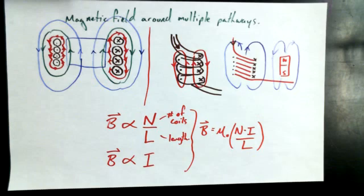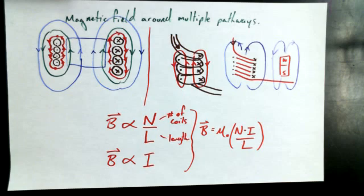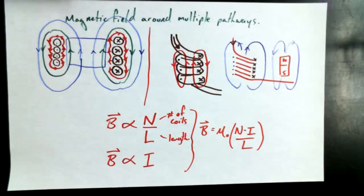A student asks where diameter factors in. The teacher acknowledges it's a good question — these fields are stronger closer to the wire — and notes that how radius fits into this formula would need further thought.